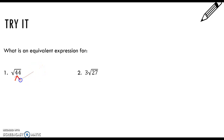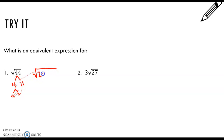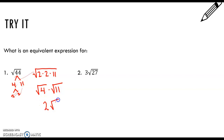So 44, if I break that up, is 4 times 11. 4 is 2 times 2. So the square root of 44 is the square root of 2 times 2 times 11, or the square root of 4 times the square root of 11, or 2 root 11.